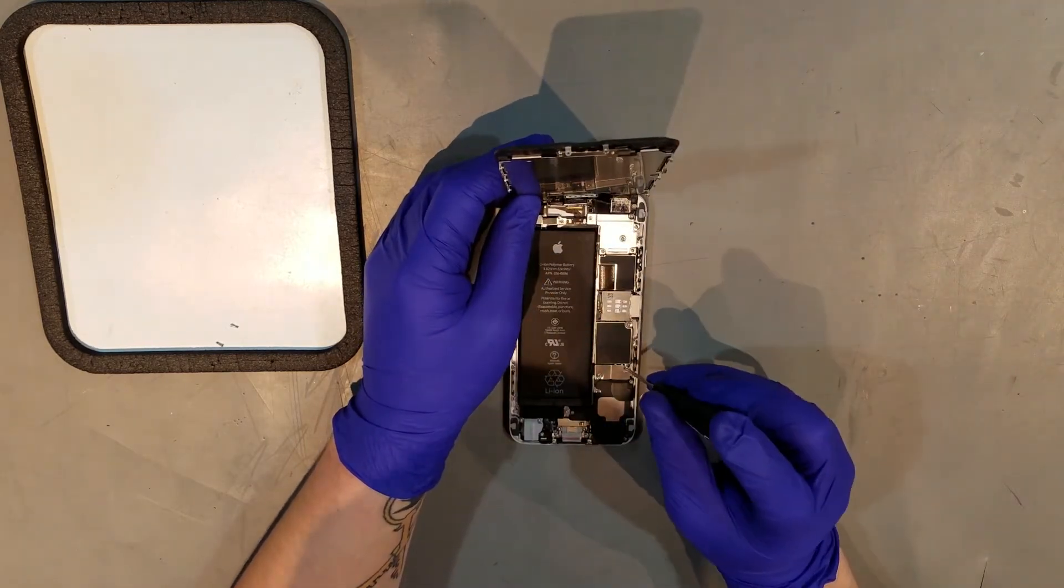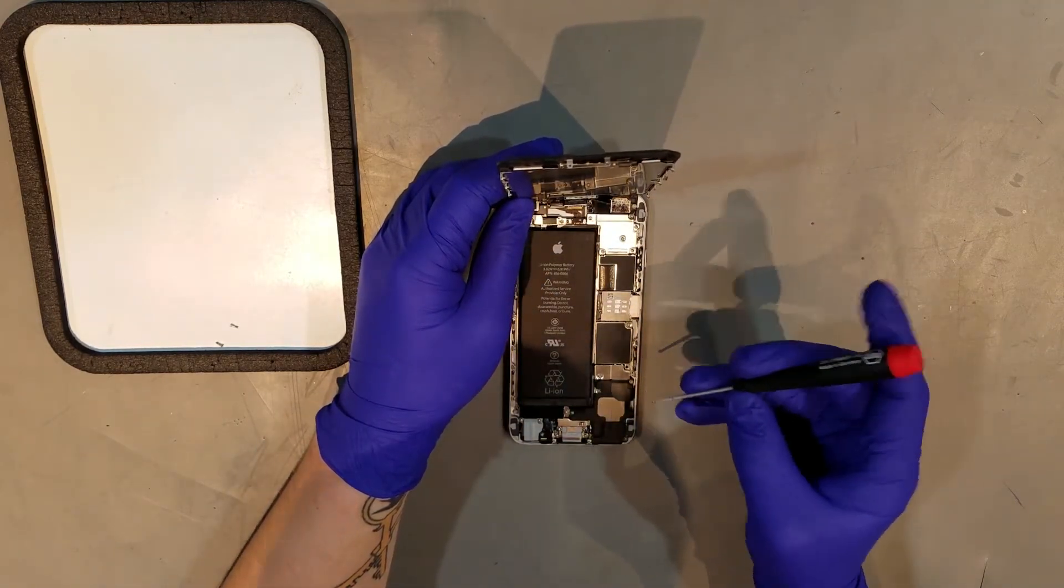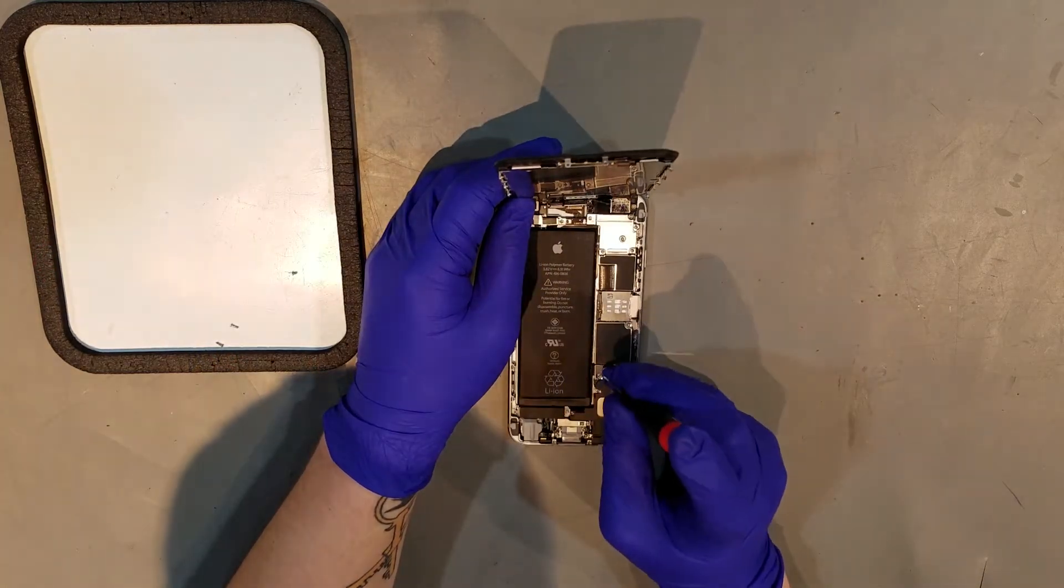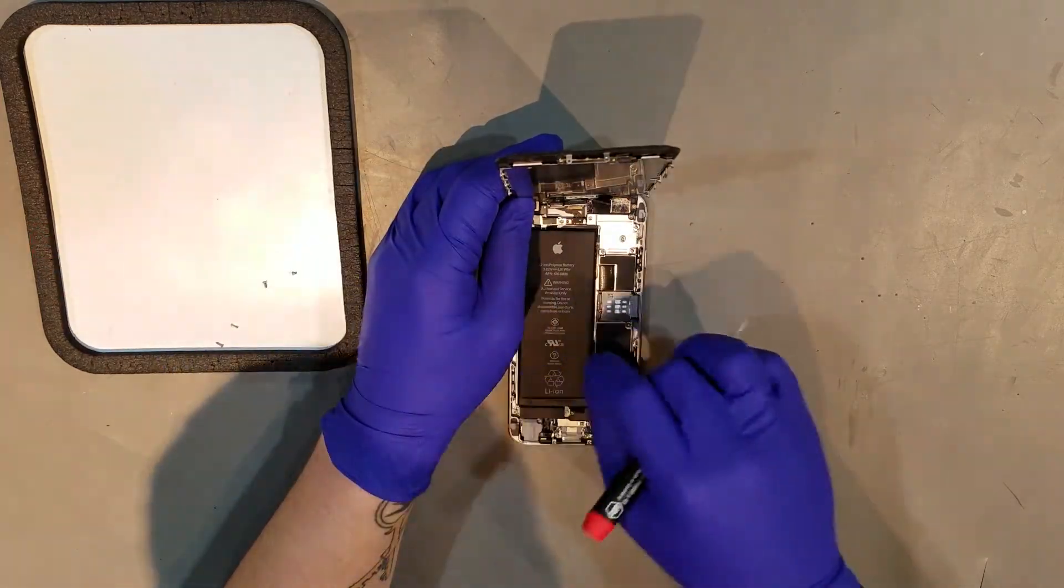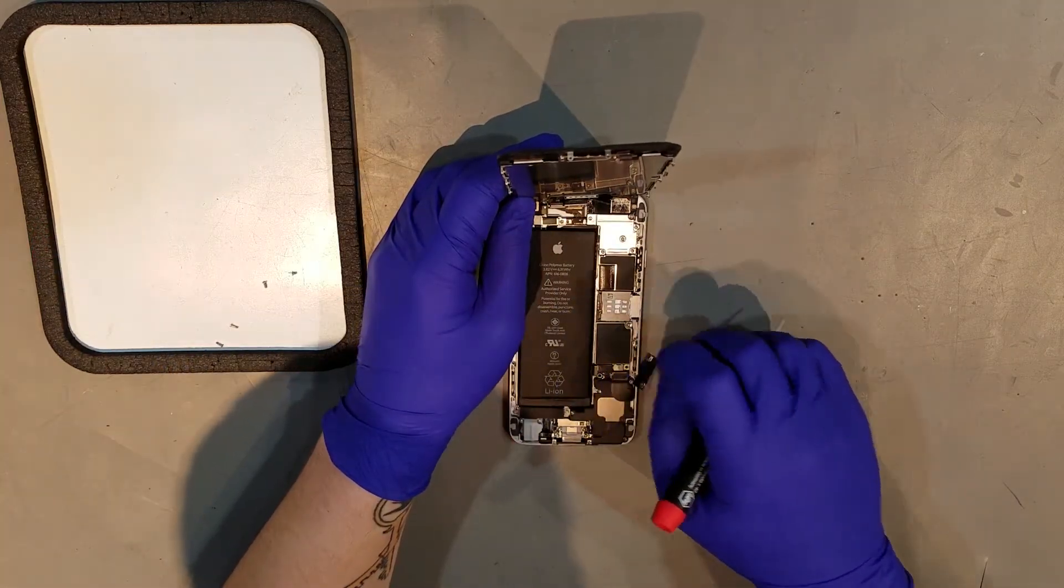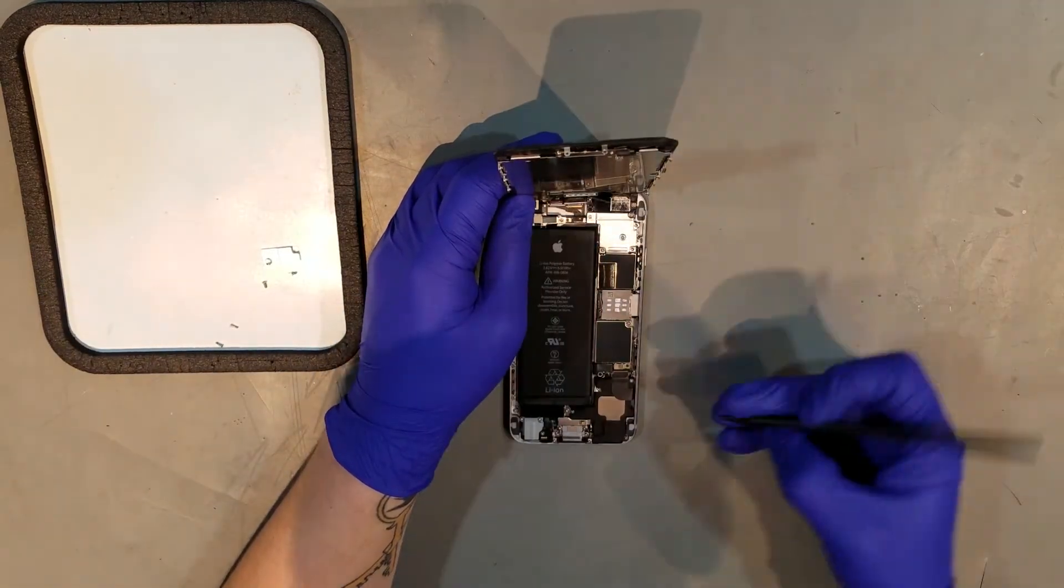Before proceeding any further, the battery must be unplugged. Removing the two Phillips screws will allow you to remove the shield that covers the clips for the battery and charge port. Once the shield is off, simply unclip the battery.